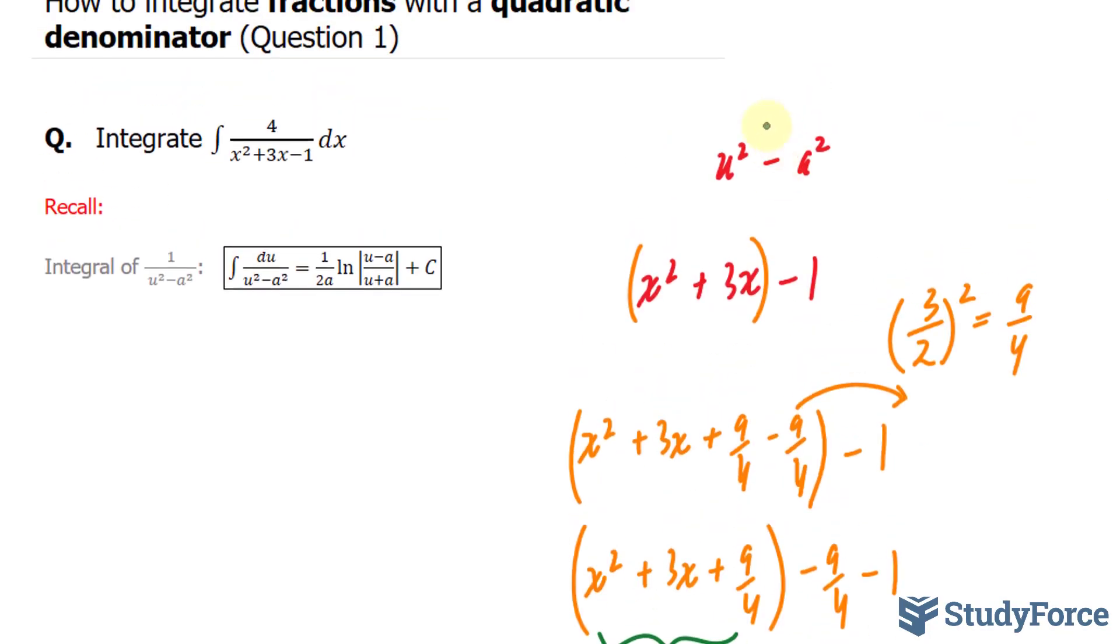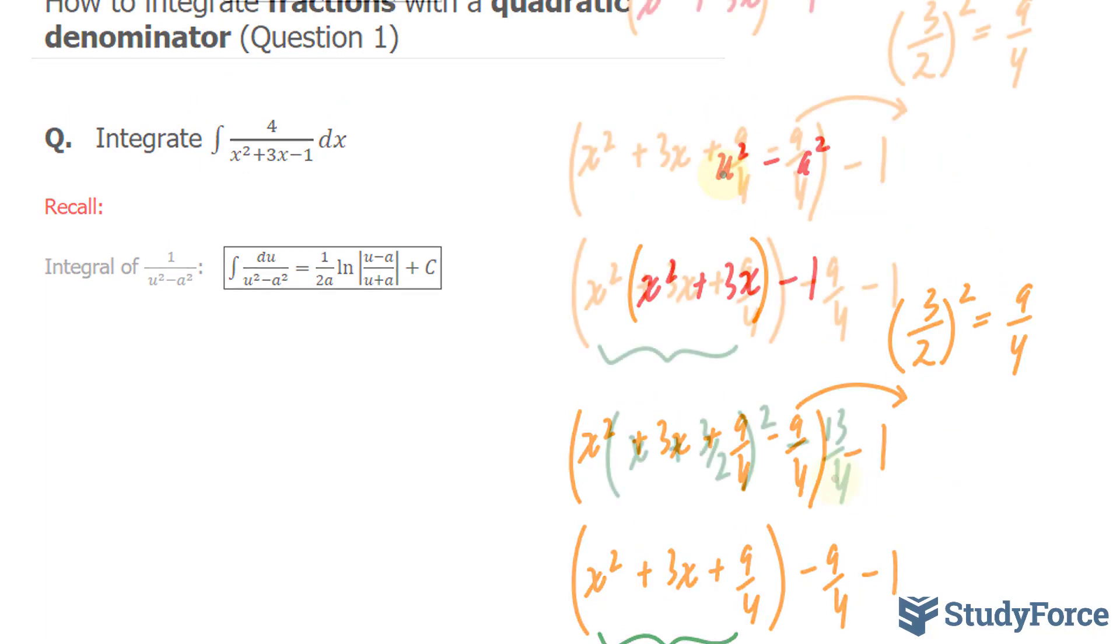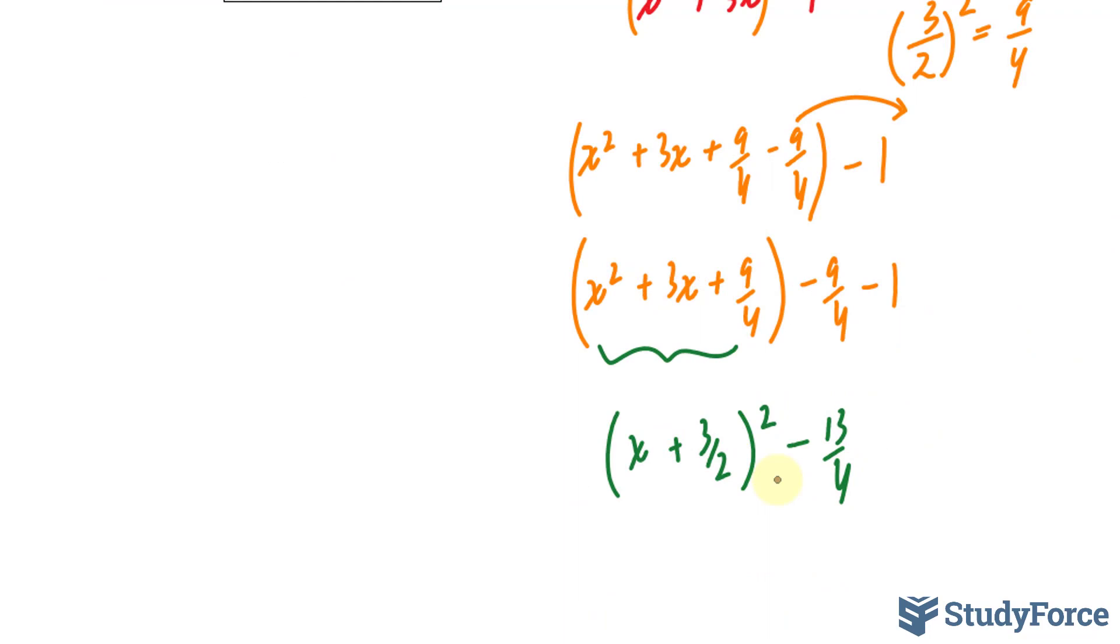So we wanted our quadratic to be written as u to the power of 2 minus a to the power of 2. Our quadratic doesn't look like that yet. To make it look like that, we have to square root both the top and the bottom of this fraction and power it to 2.